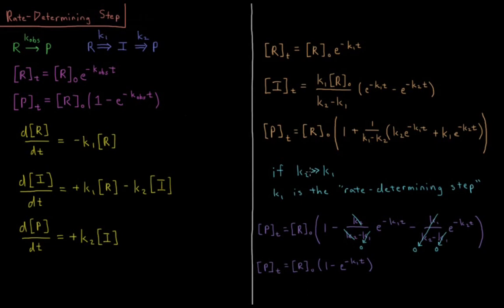Let's assume that k2 is much, much faster than k1, or k2 is much, much bigger than k1. If that's the case, what happens?